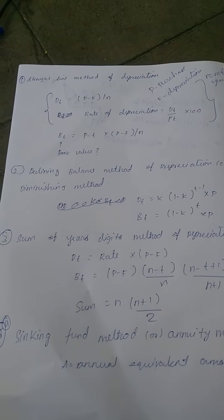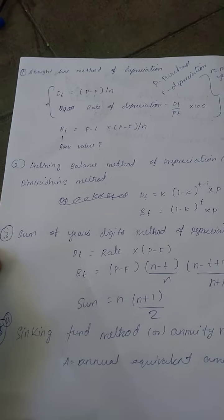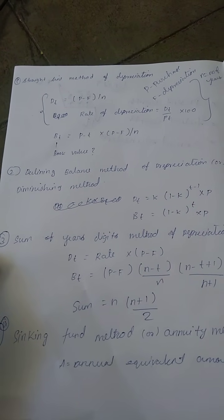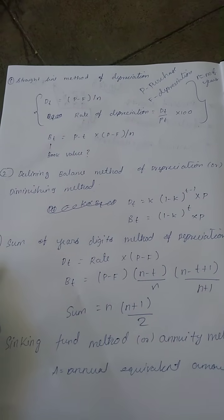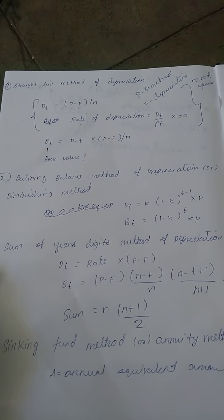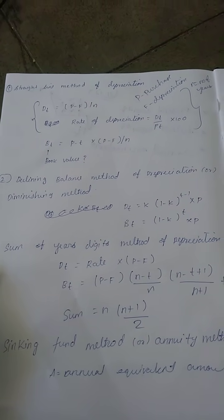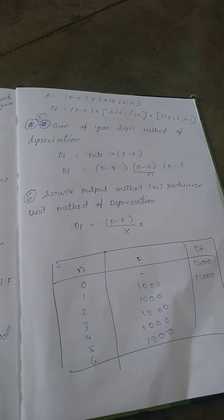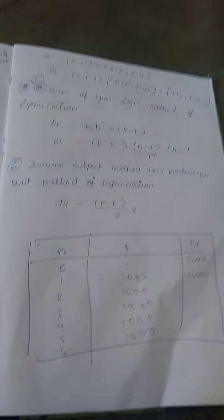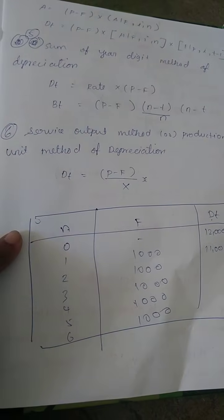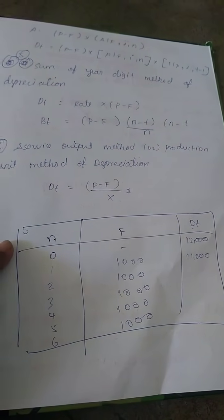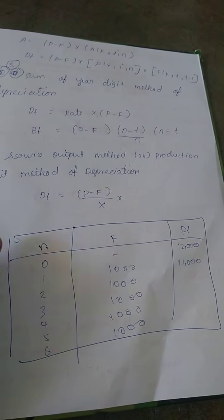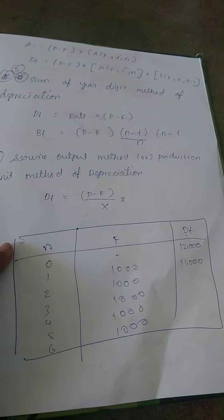For each method, there are three formulas for depreciation, book values, and book value. It is easy using the straight line method with three formulas. You can find the values from the formulas using a table.